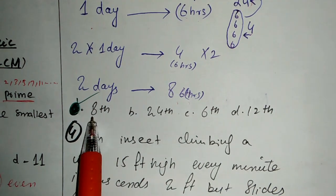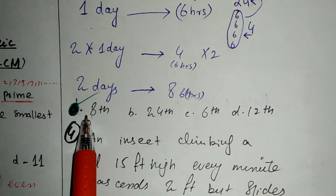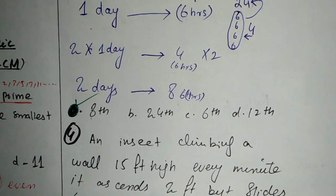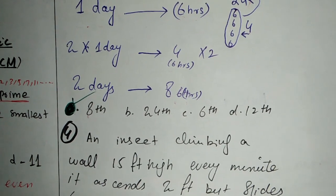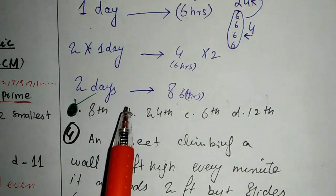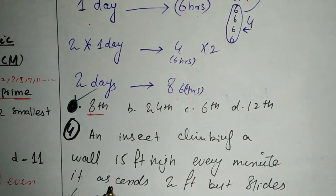So the answer is the 8th part, or 1/8. 6 hours is 1/8th of 2 days.